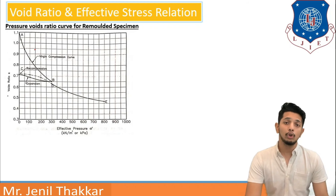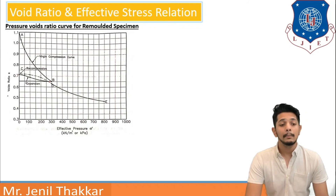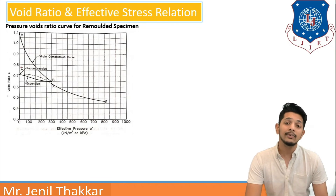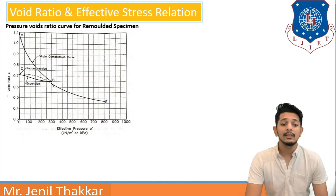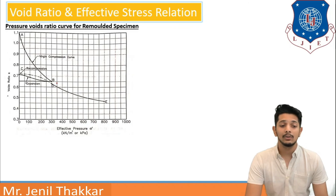If loading is stopped, the graph moves from point B to point C — the void ratio follows the path B to C. The soil will not return to its original position due to permanent changes in the soil structure. Curve BC is known as the expansion curve. If further loading is applied, the graph goes from C to D; curve CD is known as recompression, as compression is being applied again. At the same effective pressure, points B and D show a difference in void ratio, so the original void ratio is not recovered by recompression. Applying further load gives curve DE, which is also a virgin compression curve.